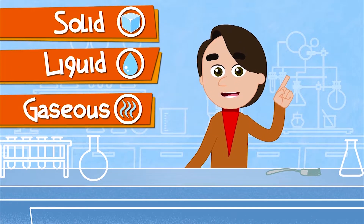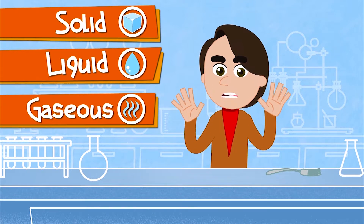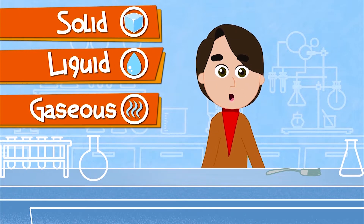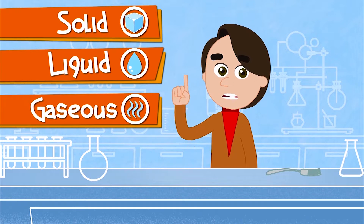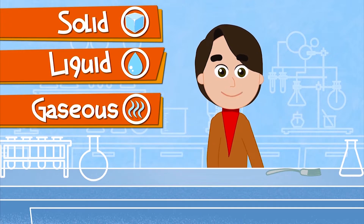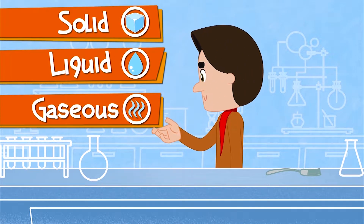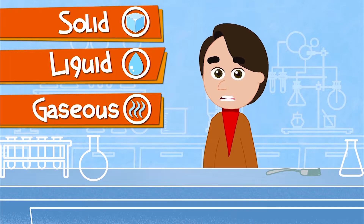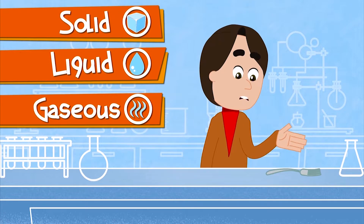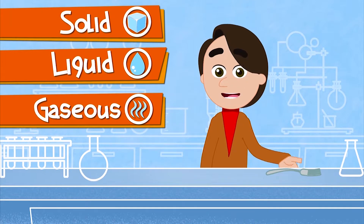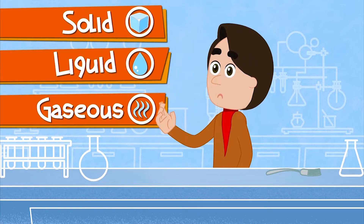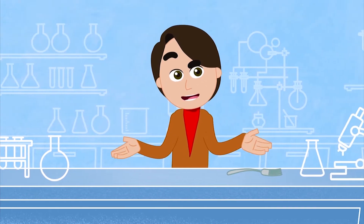In nature, we find several types of substances in different states. For example, the oxygen we breathe is in a gaseous state. The water we drink is in the liquid state. And a metal fork we use to eat is in a solid state. But why are they in different states?